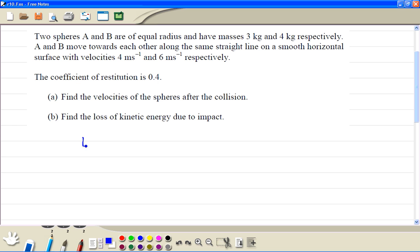On the left-hand side, we write the equation of momentum. So 3 kilograms, speed is 4, so 3 times 4. In the second sphere, the motion to the left we're going to call it negative. So minus 4 times 6 is equal to 3 times the velocity of A plus 4 times the velocity of B.